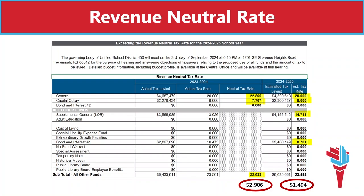About four years ago, the revenue neutral rate came into play. This required taxing entities to notify taxpayers if they are exceeding the revenue neutral rate. Revenue neutral means that we would generate the same exact amount of tax dollars as the previous year. If we generate more tax dollars, we are exceeding the revenue neutral rate. This is the form that we just looked at, but this time I want to focus on the fourth column, which shows how many mills it would take to stay neutral or generate the same dollars as last year.